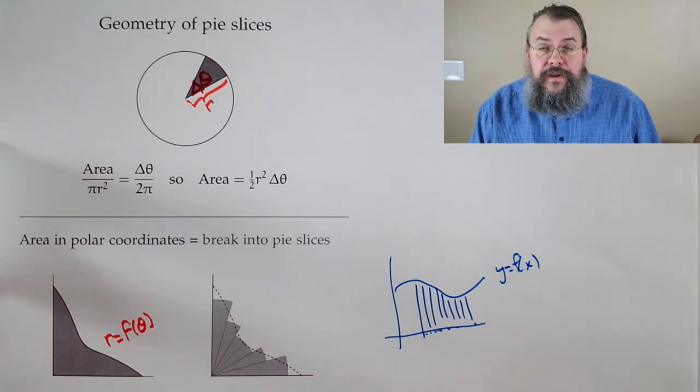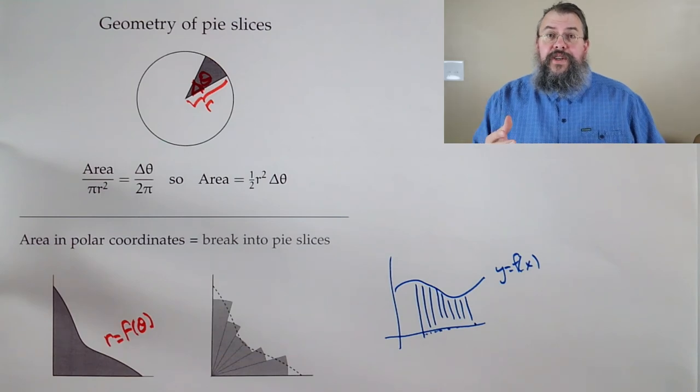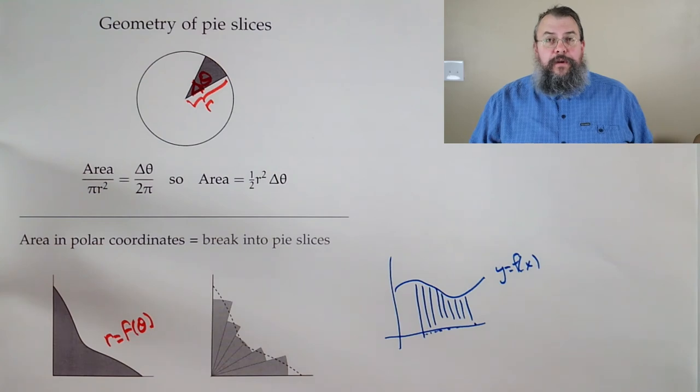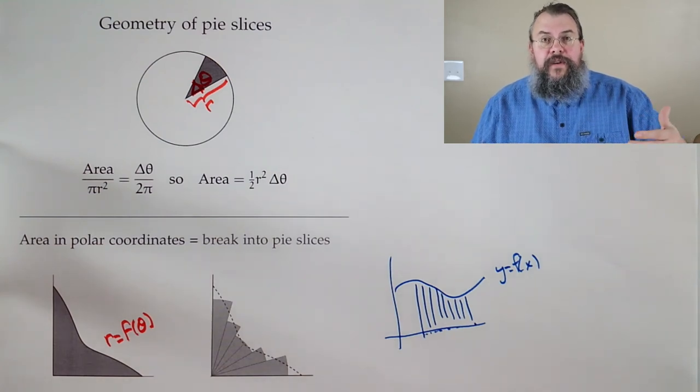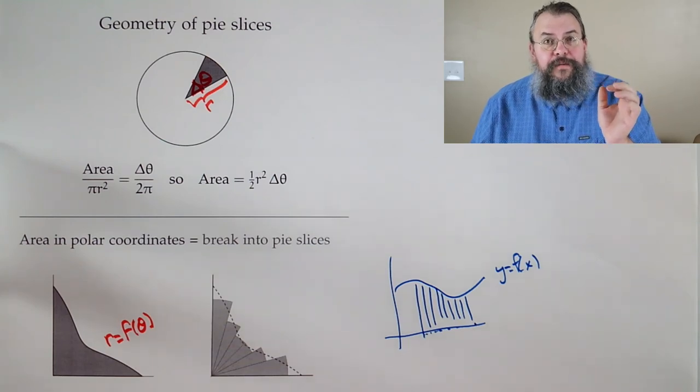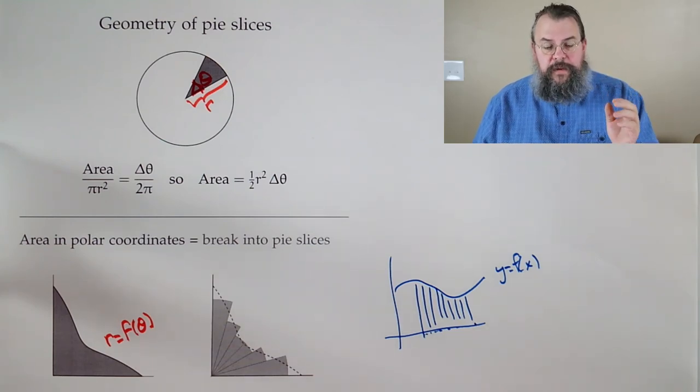And the thing is, the more wedges you use, the better the approximation gets. That's sort of the underlying idea of integration, right? The more pieces you use, the smaller the individual pieces become, the smaller your error becomes. And so the better your answer becomes.